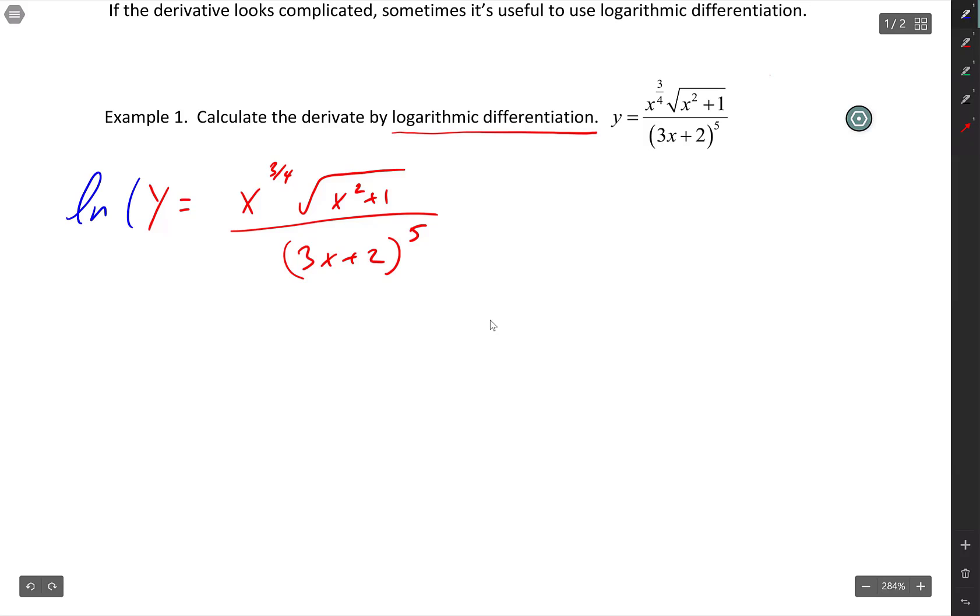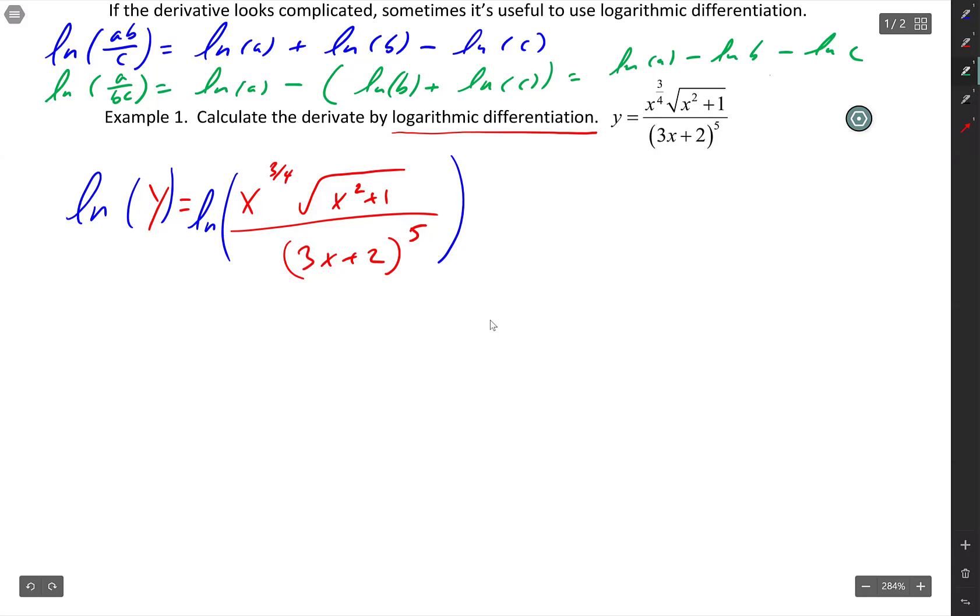So what that means is whatever you do to one side, you do to the other, and you're going to write ln of the whole shebang. Now, a side note, just in case you forgot, if I have ln of AB over C, that's the same thing as saying ln A plus ln B minus ln C.